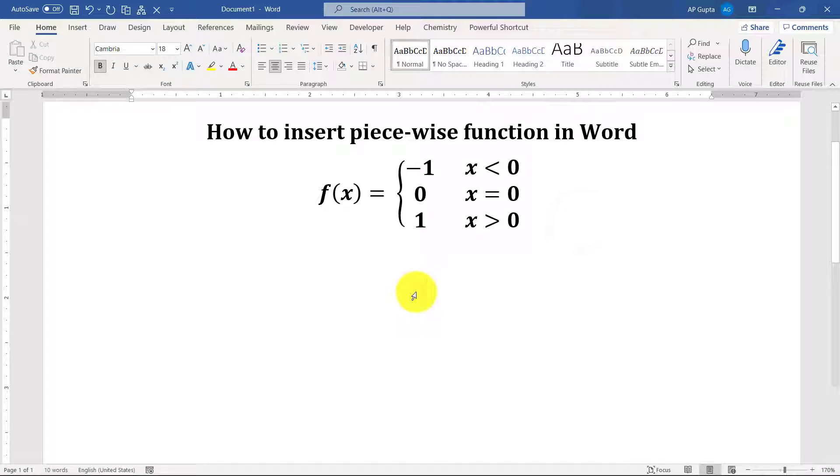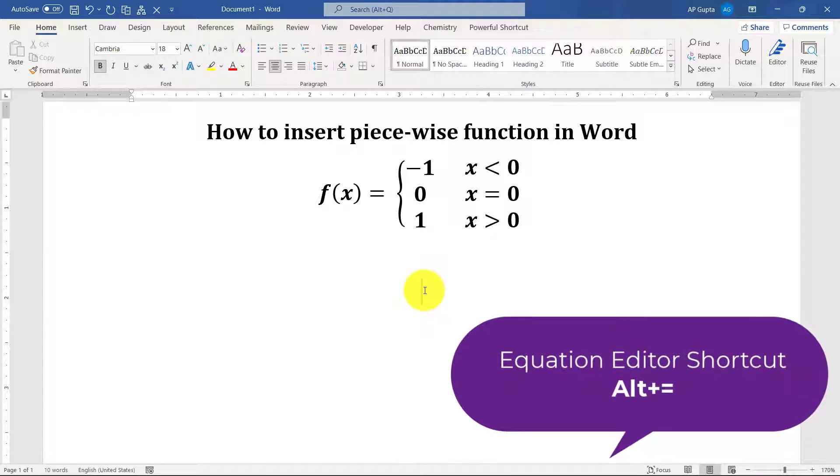First of all, you need to get the equation editor for writing this kind of function. The shortcut to get the equation editor is Alt and equal to. The moment you press Alt equals, you get the equation editor.